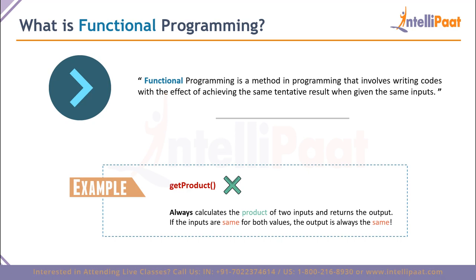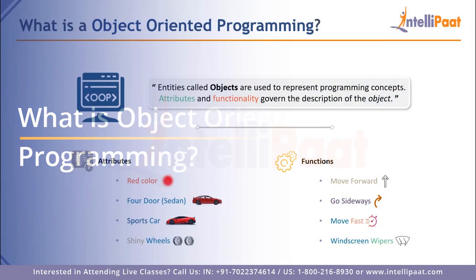As you can see on screen, the get-product function can always calculate the product of two inputs and will give you the same output. If we give two and two as input, we get four; if we give three multiplied with six, we get 18 — always. This property of always providing the expected output, focusing on what the result is rather than how you get there, is what functional programming mainly concentrates on.